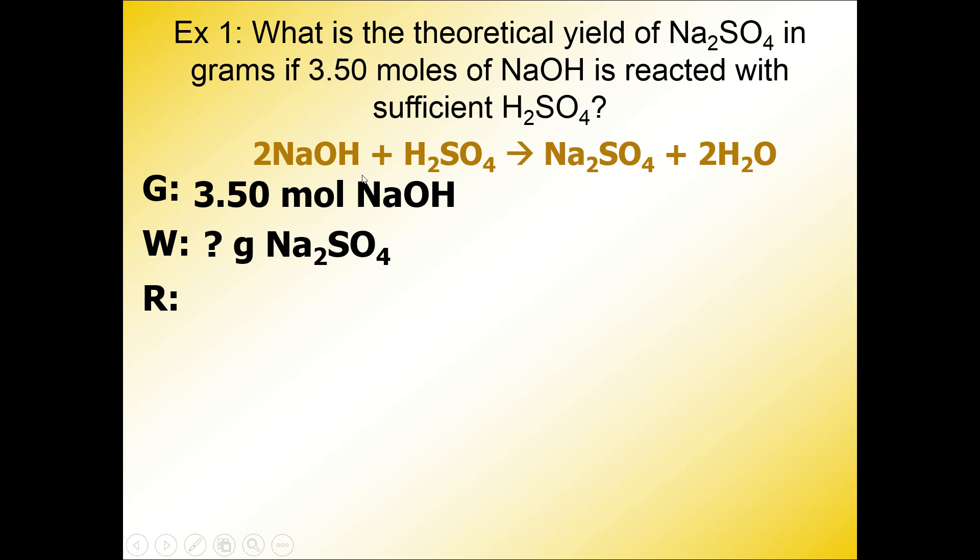If we have two different substances, write a mole-to-mole ratio between this guy and that one. So 2 moles of NaOH, we're getting the numbers from the coefficients, 2 moles of NaOH to 1 mole of Na2SO4.